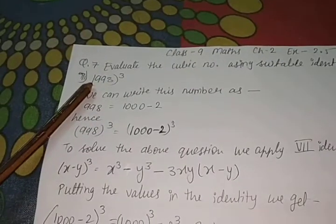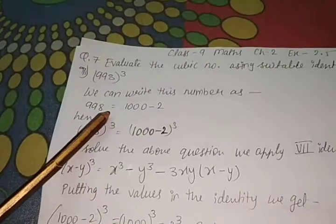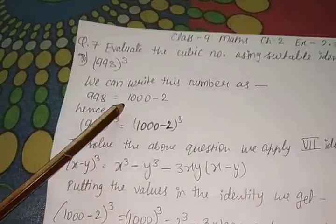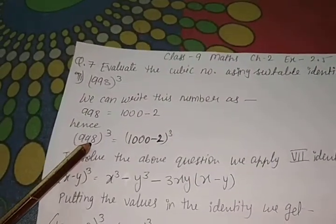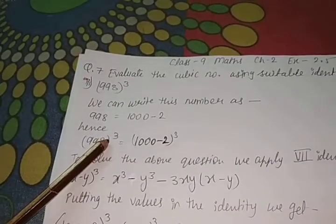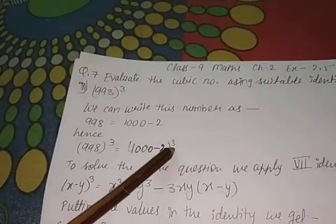So we can write this number as 998 equals 1000 minus 2, because 1000 minus 2 gives us 998. And if 998 has the power notation 3, that means 1000 minus 2 also has the power notation 3.